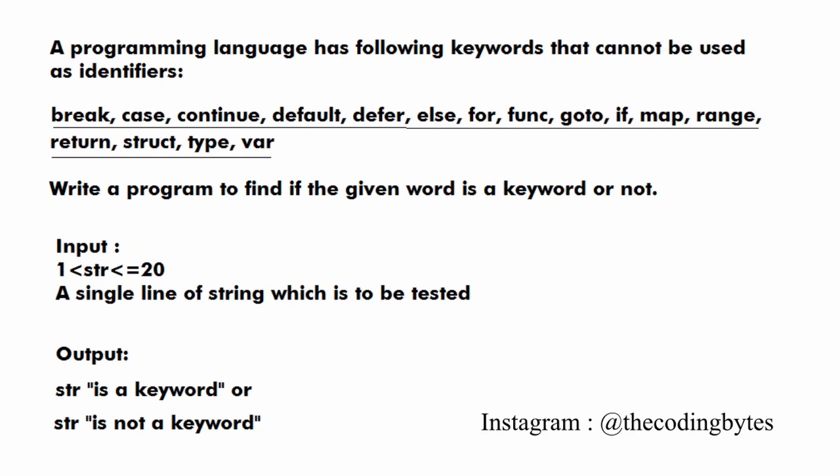Hello and welcome to Coding Bytes. I am Abhishek Parmar and in this video I am going to solve a question of TCS and Qt which was asked previously. The question is: a programming language has the following keywords that cannot be used as identifiers.